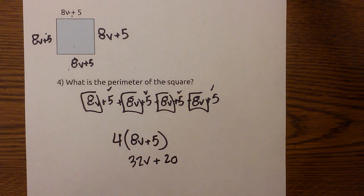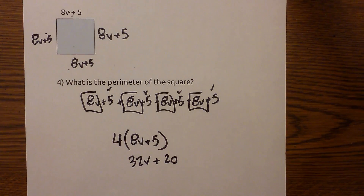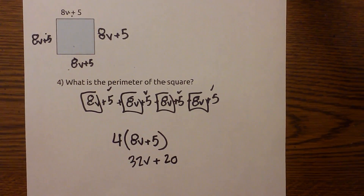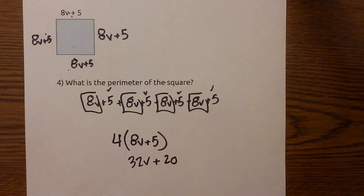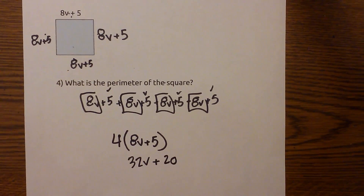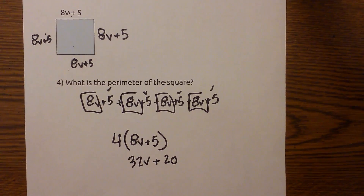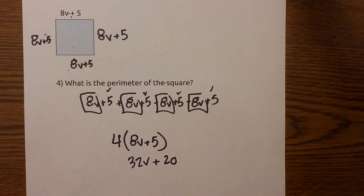That speeds up the process. I hope that helps with finding the perimeter and area of rectangles and triangles. Thanks for watching. MooMooMath uploads a new Math and Science video every day — please subscribe and share.